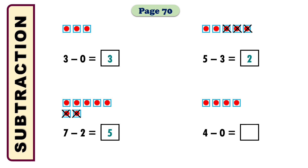In the next math it says 4 minus 0 equals what? I am taking 4 boxes. As you know, 0 means nothing, so I don't need to cross any box among the 4. How many remain? It remains the same number — we have 4 boxes available, so the answer will be 4.